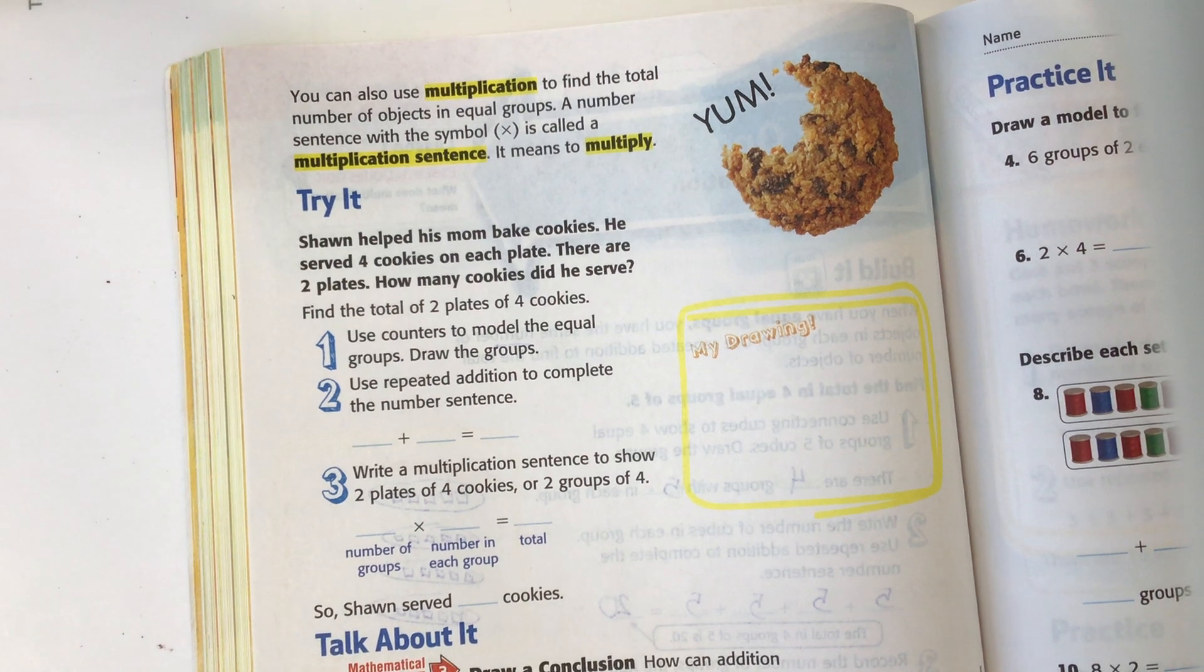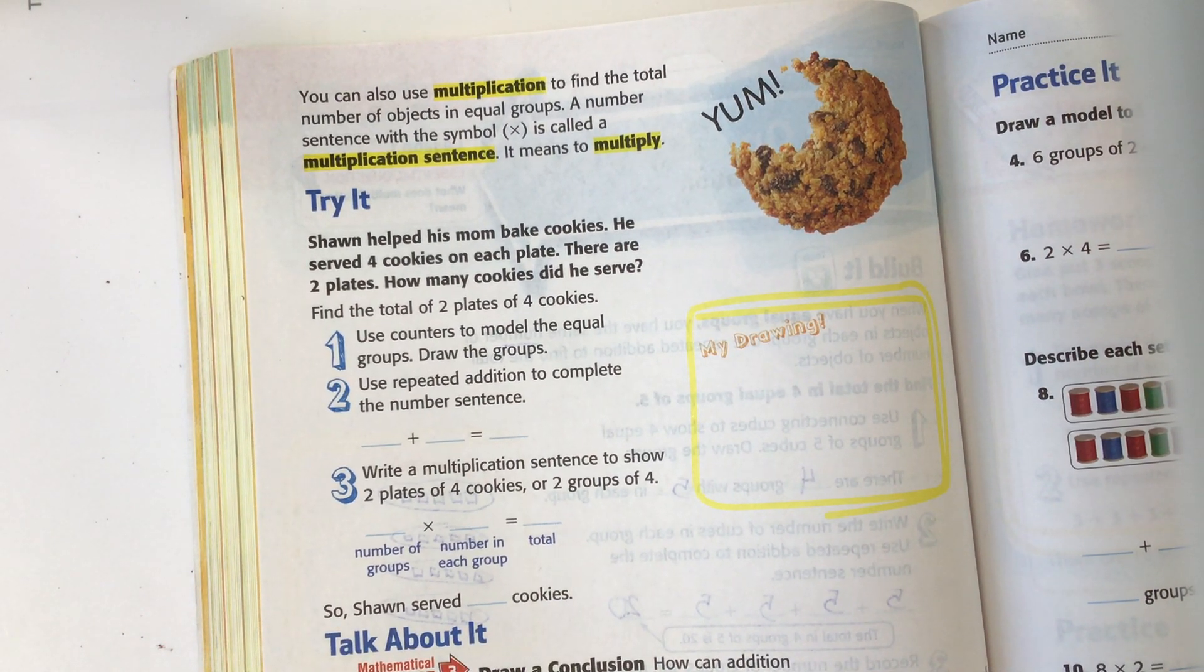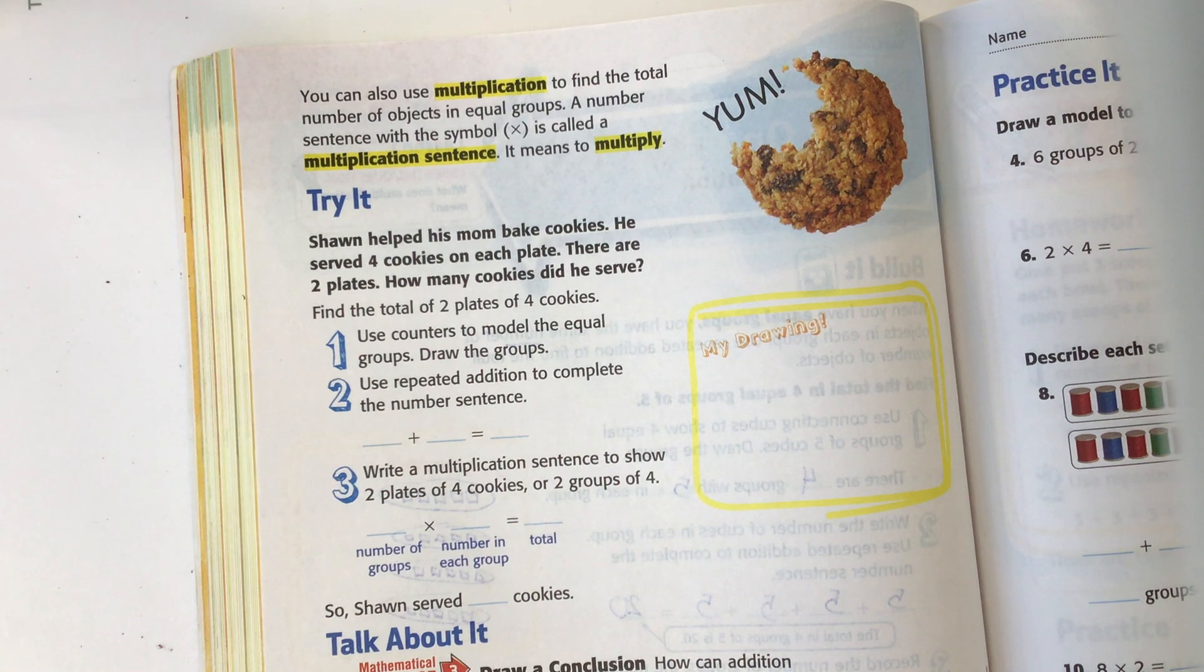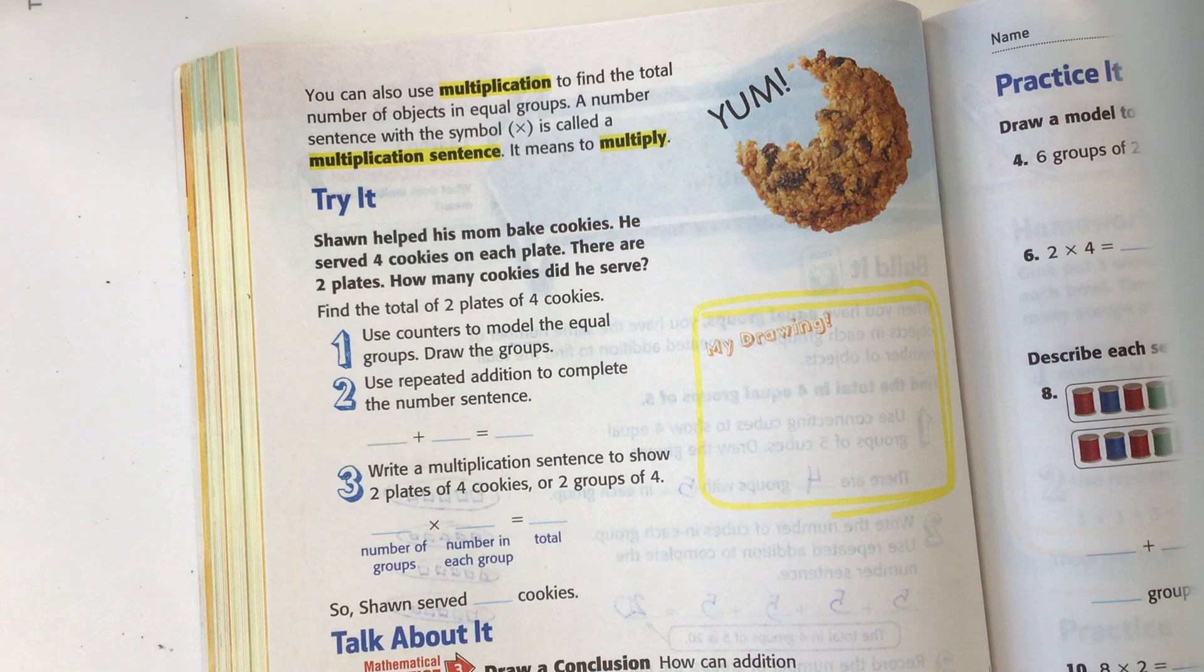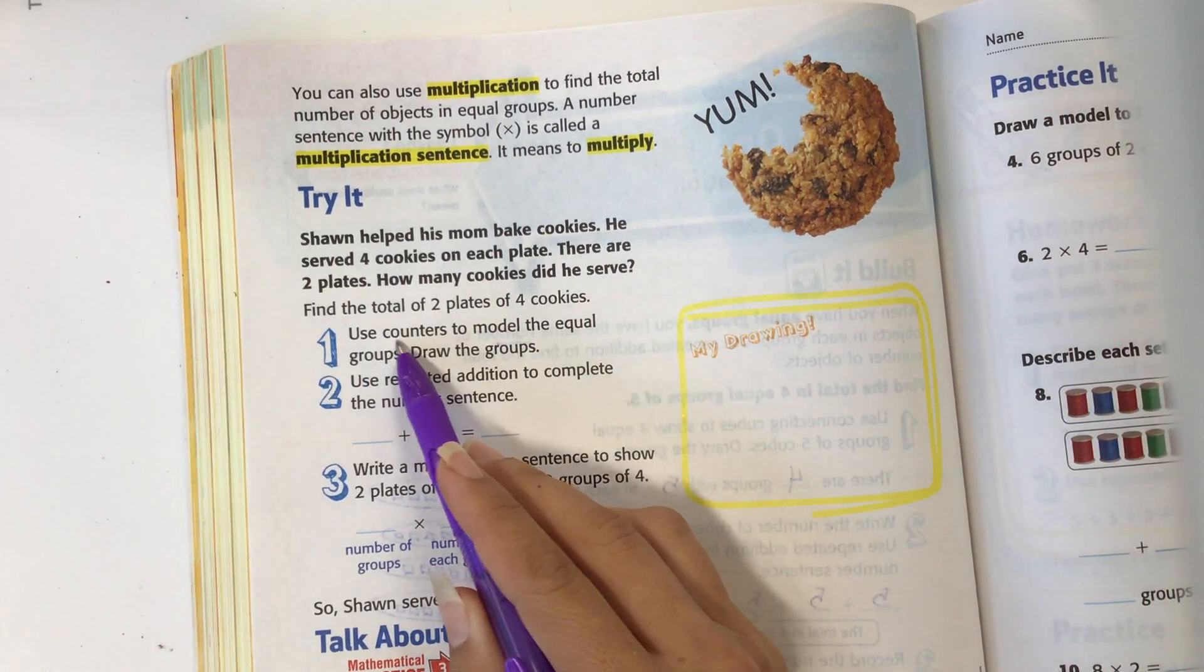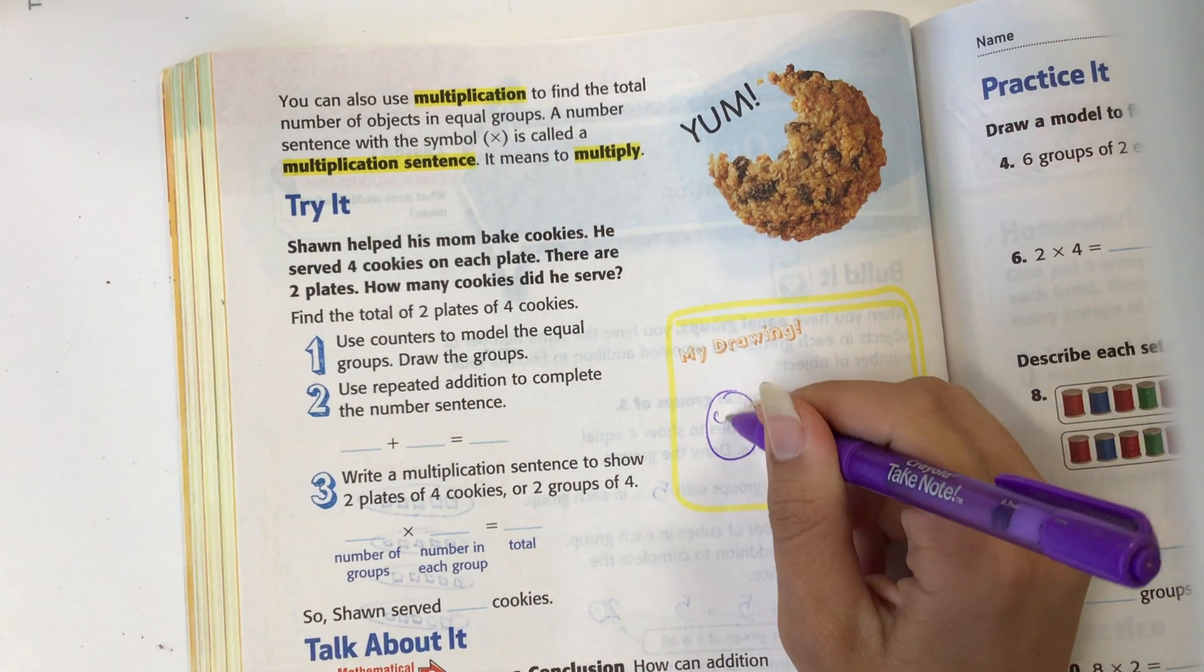Try it. Sean helped his mom bake cookies. He served four cookies on each plate. There are two plates. How many cookies did he serve? Find the total of two plates of four cookies. Use the counters to model the equal groups and draw the groups. So I have two plates and I have four cookies.